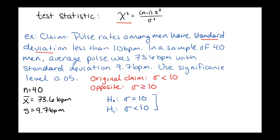Now, based upon this alternative hypothesis, we know that this is going to be a one-tailed test. In this case, it's a left-tailed test since we have something less than 10. And then we're going to compute our test statistic.